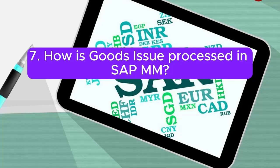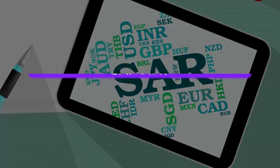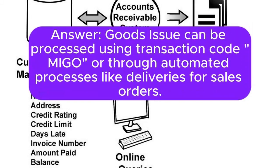Question 7: How is goods issue processed in SAP MM? Answer: Goods issue can be processed using transaction code MIGO, or through automated processes like deliveries for sales orders.